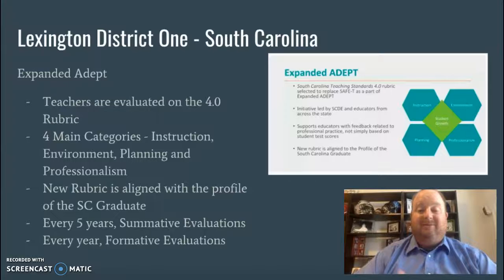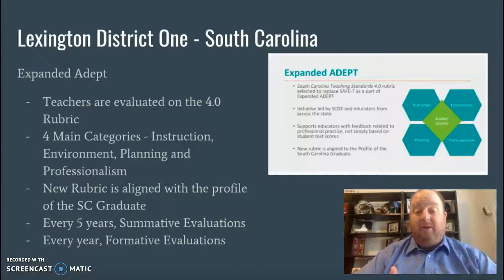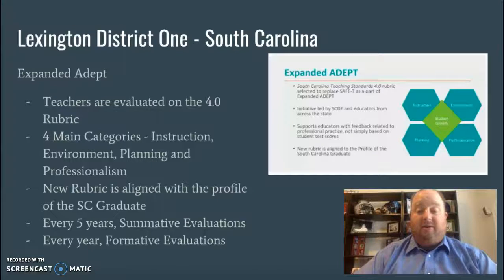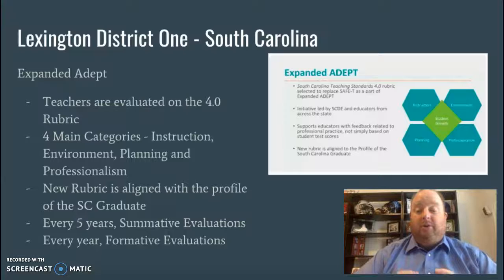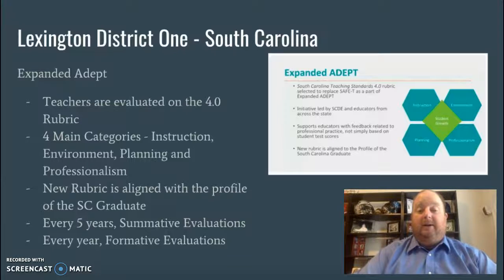There are four main categories: instruction, environment, planning, and professionalism. Each category has about six to twelve indicators, so there's a lot to look for during an evaluation. It's aligned with the Profile of the South Carolina Graduate. We are evaluated summatively — a big evaluation every five years — and annually to help grow as a teacher and to recertify and renew contracts.